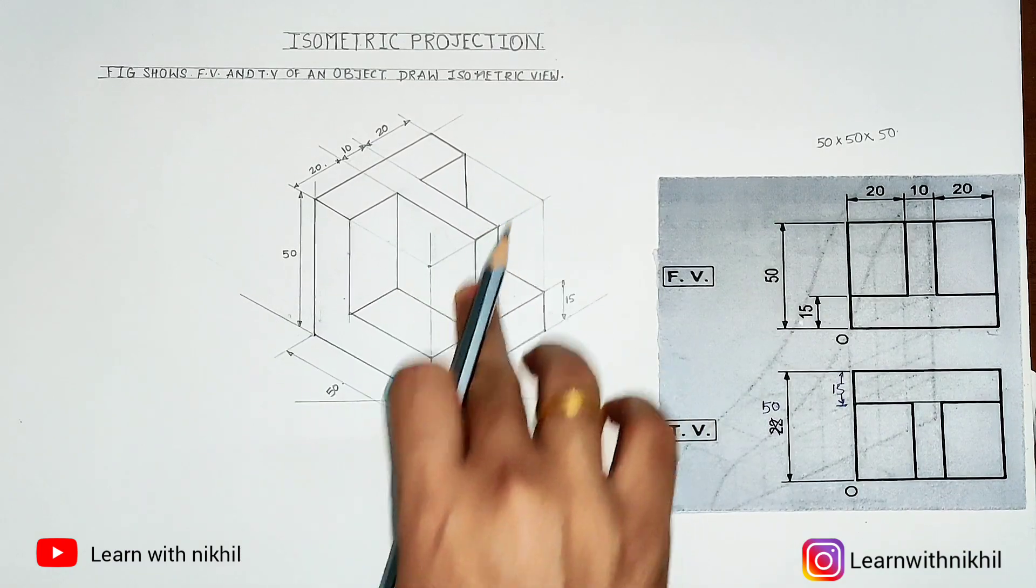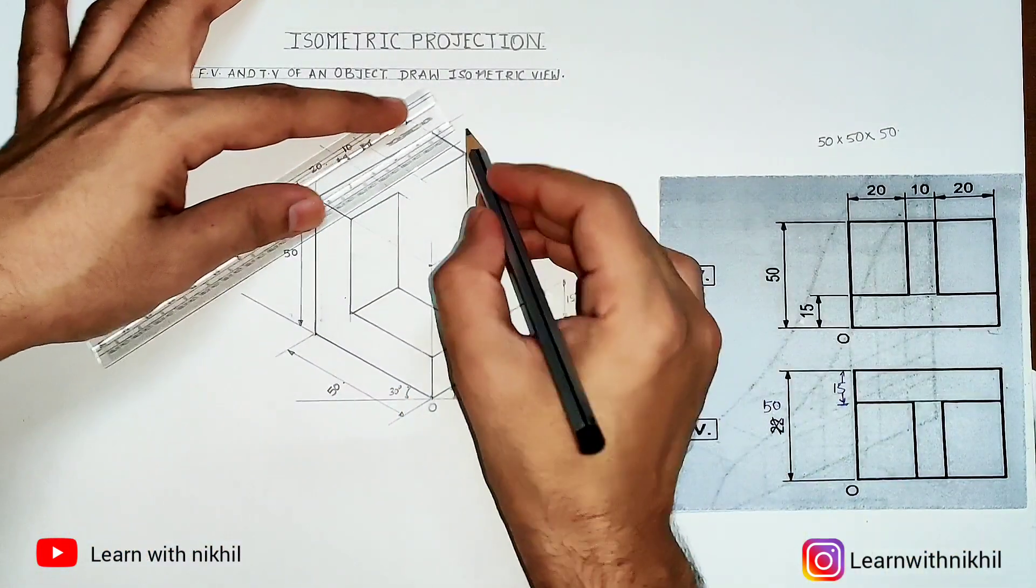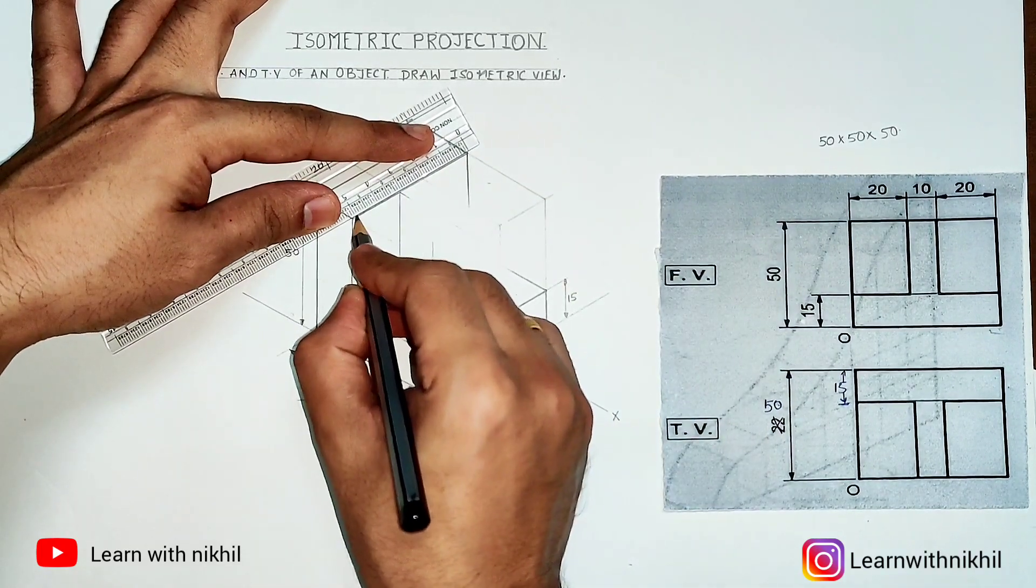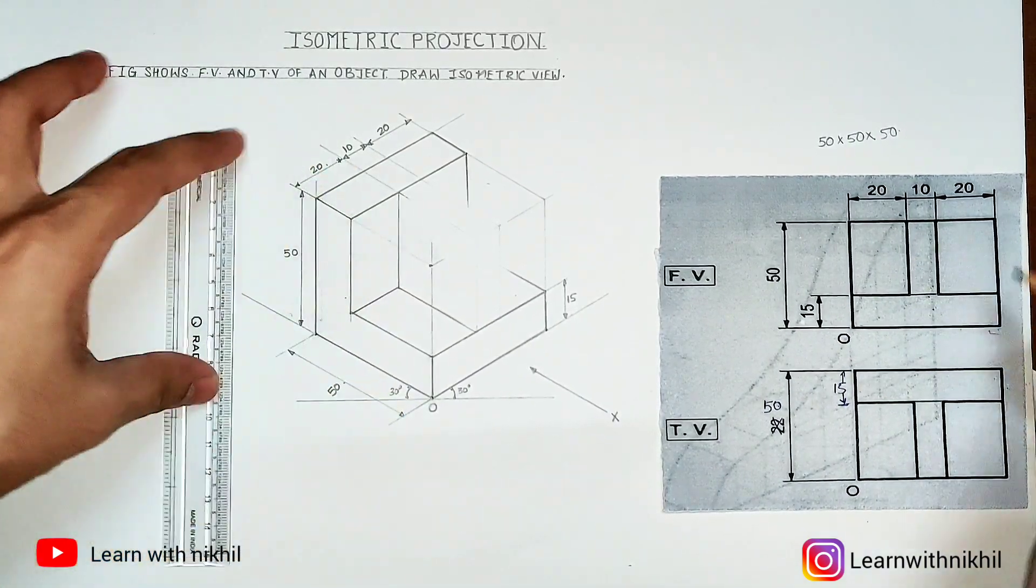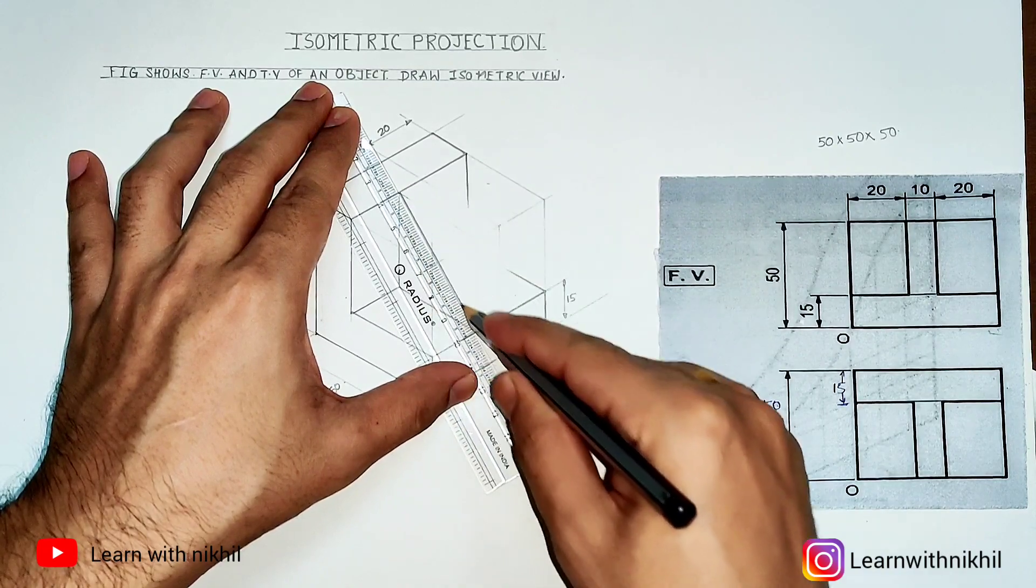So for drawing that, we will just remove this part. Now this is this line, and joining this line will be this part. Now we'll draw the slant line joining these two lines.